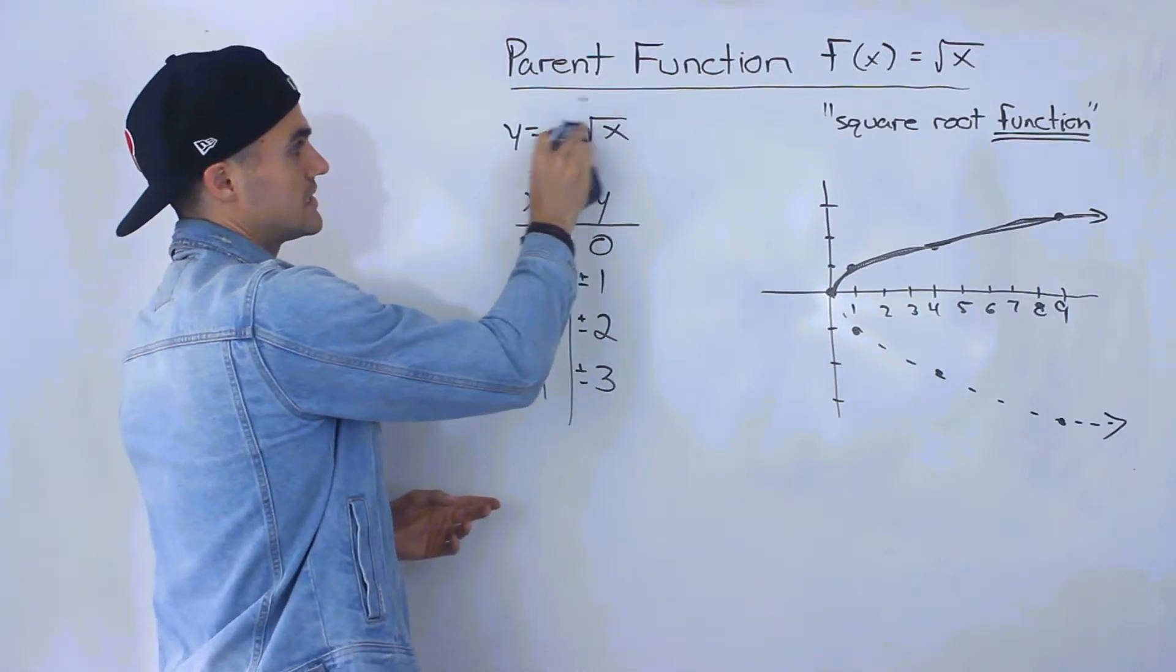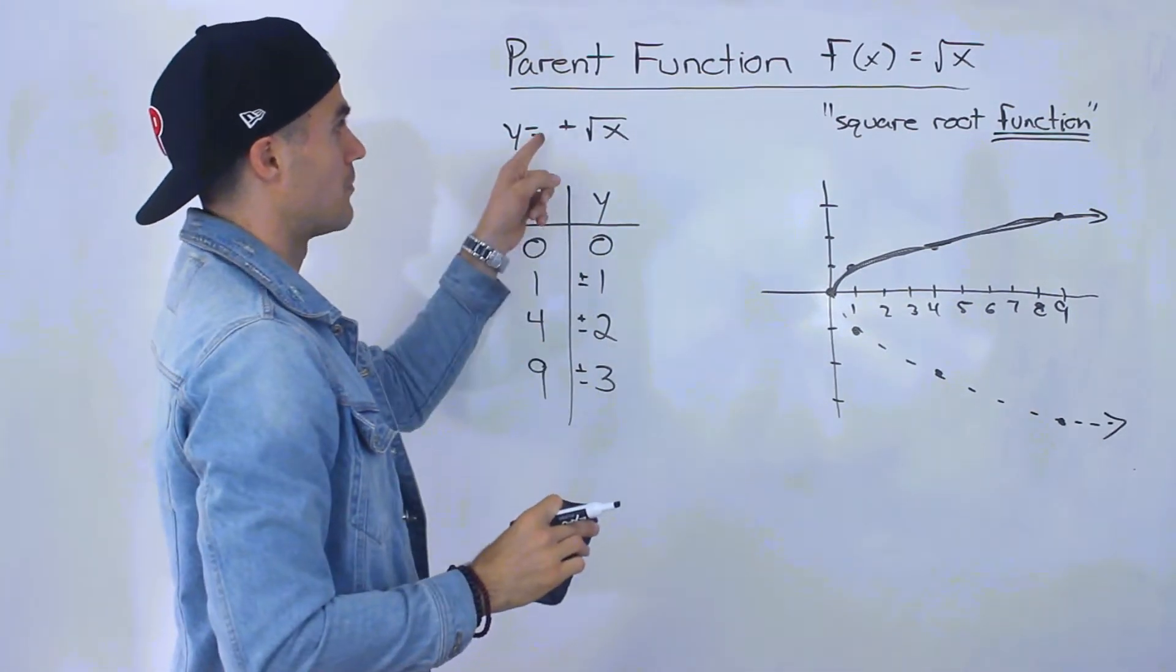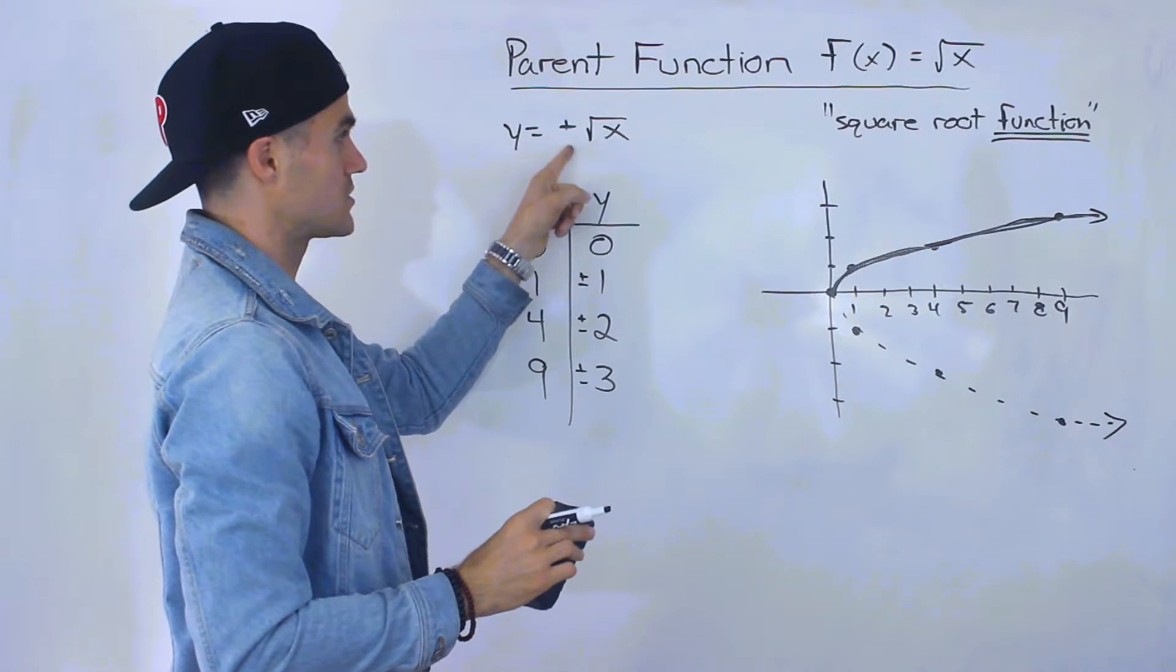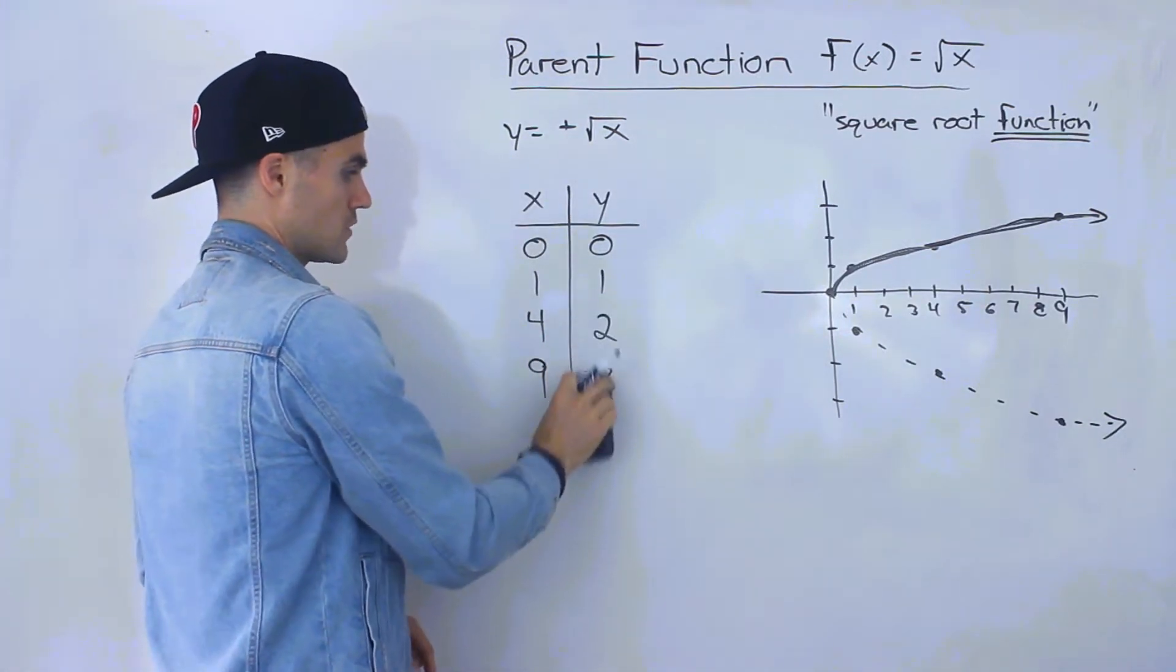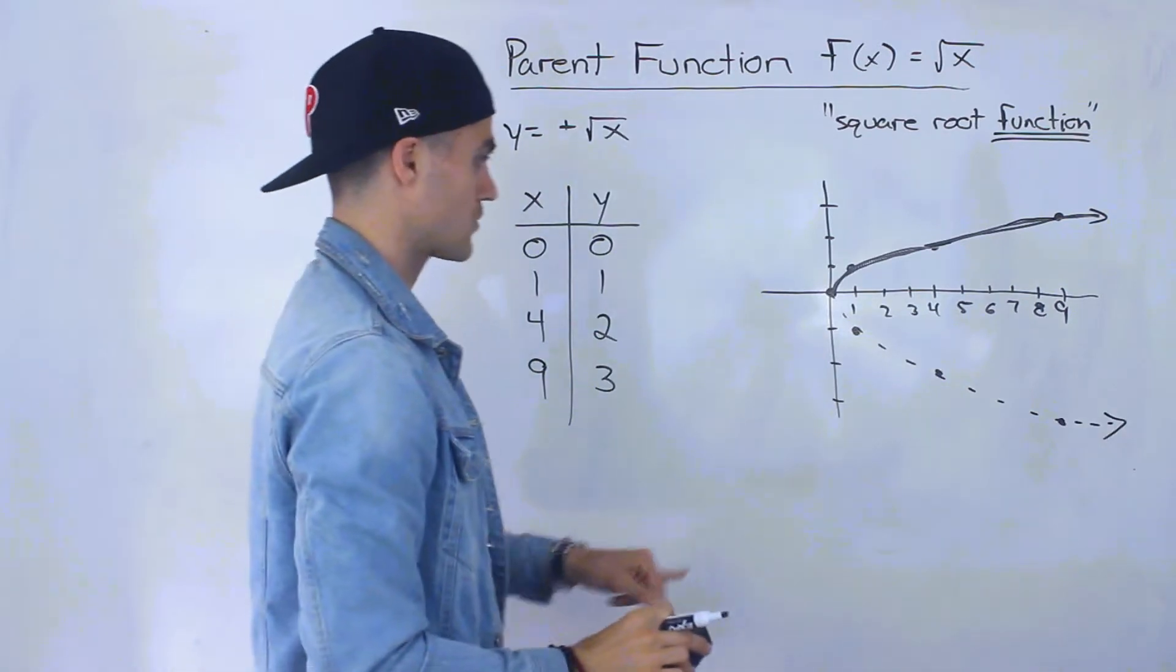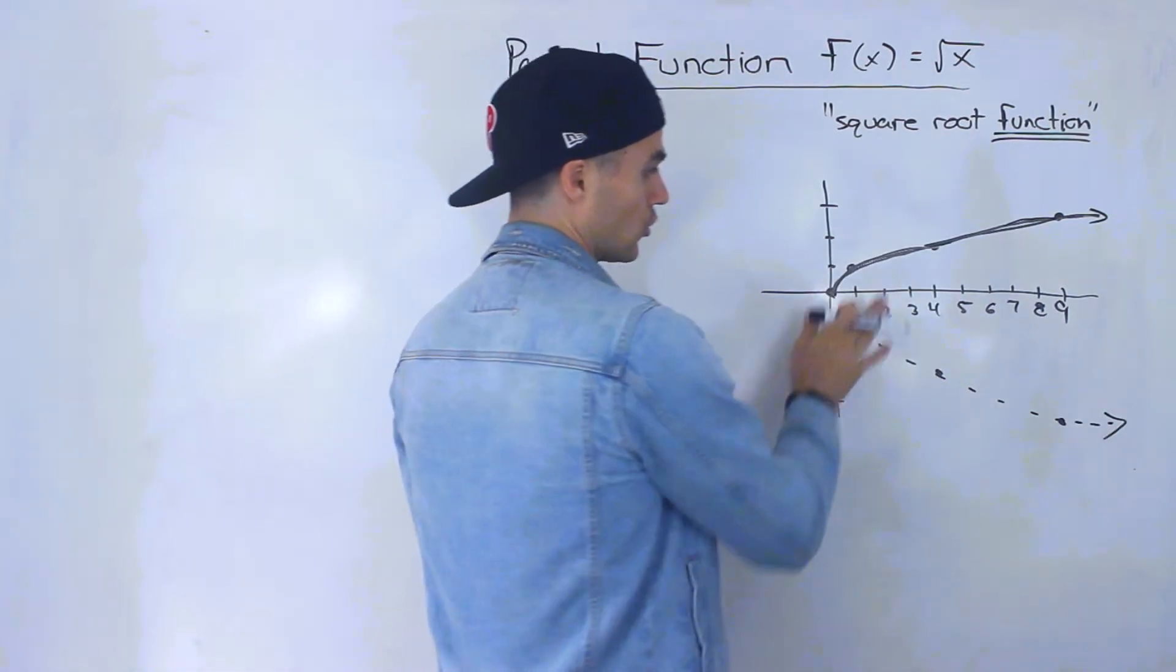So when you're dealing with the parent function, the square root of x, you're only dealing with the positive y values, the positive square roots. So they would just be positive 1, positive 2, positive 3, and we would ignore this part here.